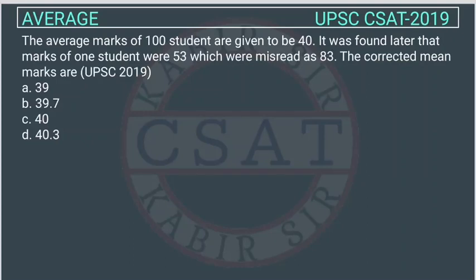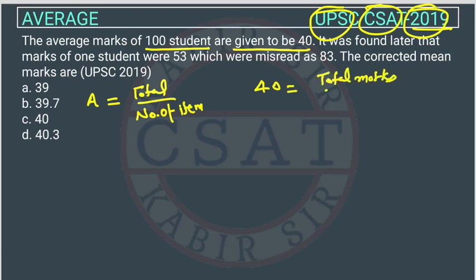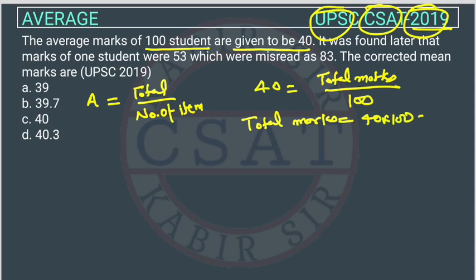This is a question on averages asked in the UPSC CSET exam 2019. The average marks of 100 students are given to be 40. Using the average formula — total marks divided by number of students — with average 40 and 100 students, total marks equals 40 × 100 = 4000.